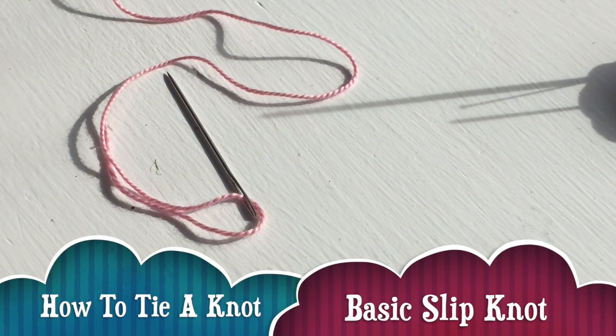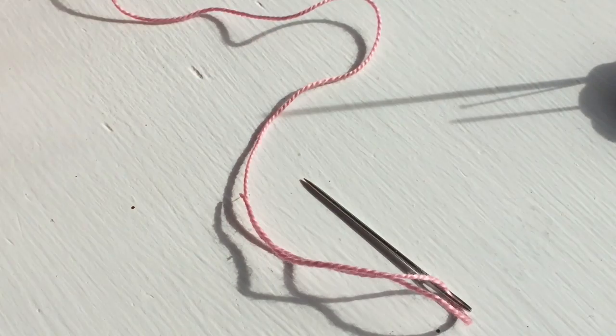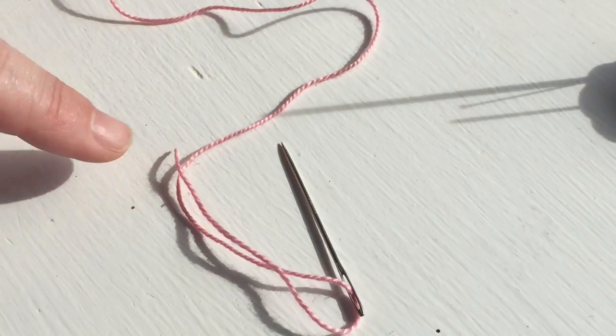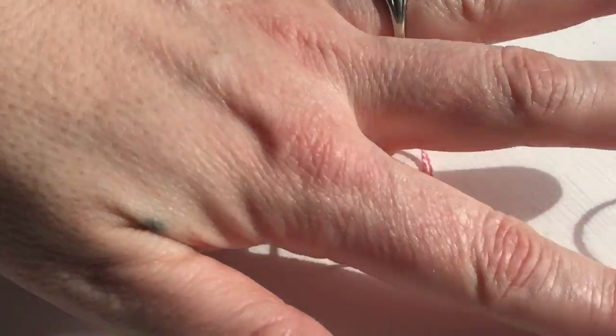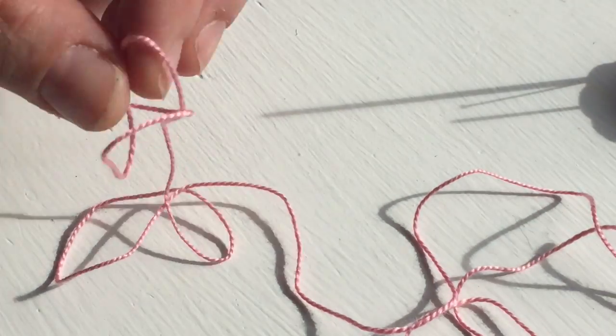Lesson number two is how to tie a basic knot. When we have our needle threaded, I have a short tail, and then I have this long piece. I want to find the end of that long piece.